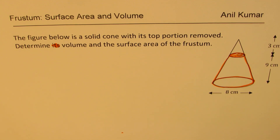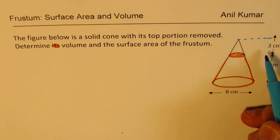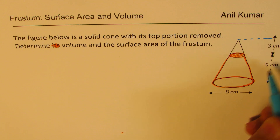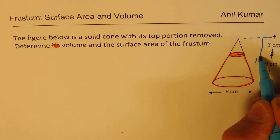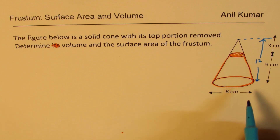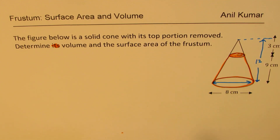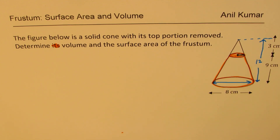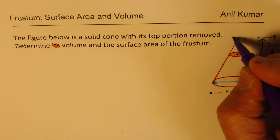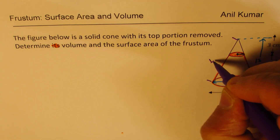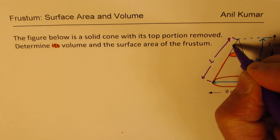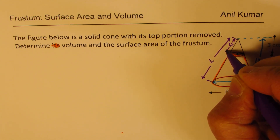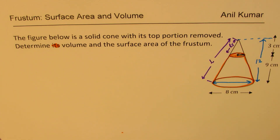We are given that the total height of the cone is 9 plus 3, which is 12. We are also given that the diameter of the base is 8 centimeters. There are a few things which are not known to us: one is the radius of the circle on top, and the other is the lateral length L. We also don't know the small lateral length Ls of the cone removed.